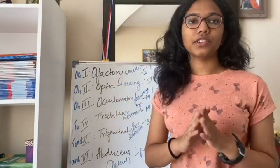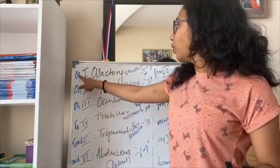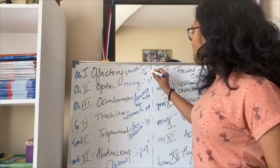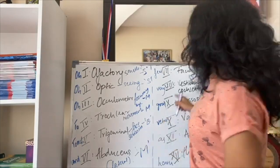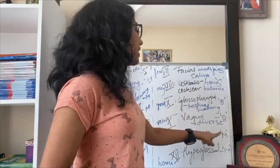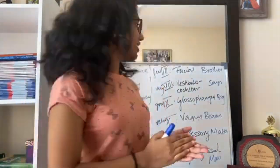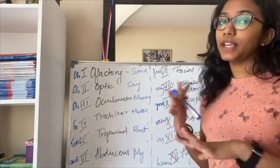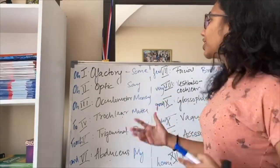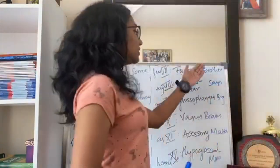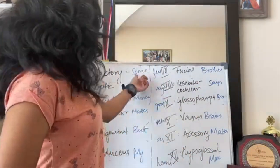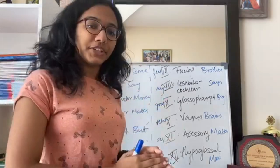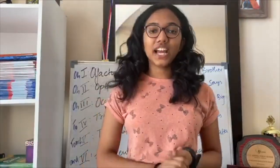The second mnemonic is for remembering whether each cranial nerve is sensory, motor, or both: 'Some Say Money Matters But My Brother Says Big Brains Matter More.' In this mnemonic, S stands for sensory, M for motor, and B for both. So you can map each word to the corresponding cranial nerve in order to know its type.